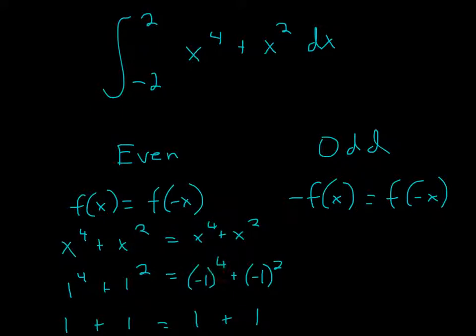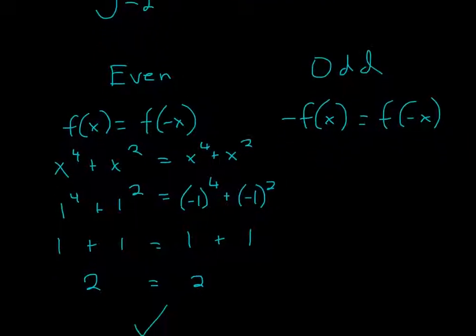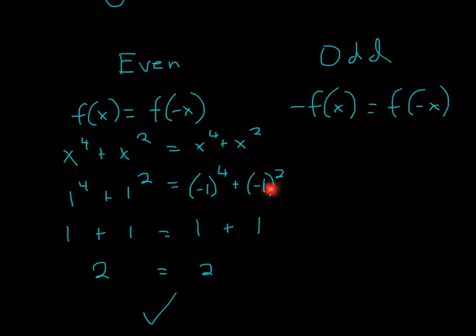Well, this is just going to be 1, because negative 1 to the fourth is 1, and negative 1 squared will be 1. Over here, since we're plugging in 1 here, it's just 1, 1.